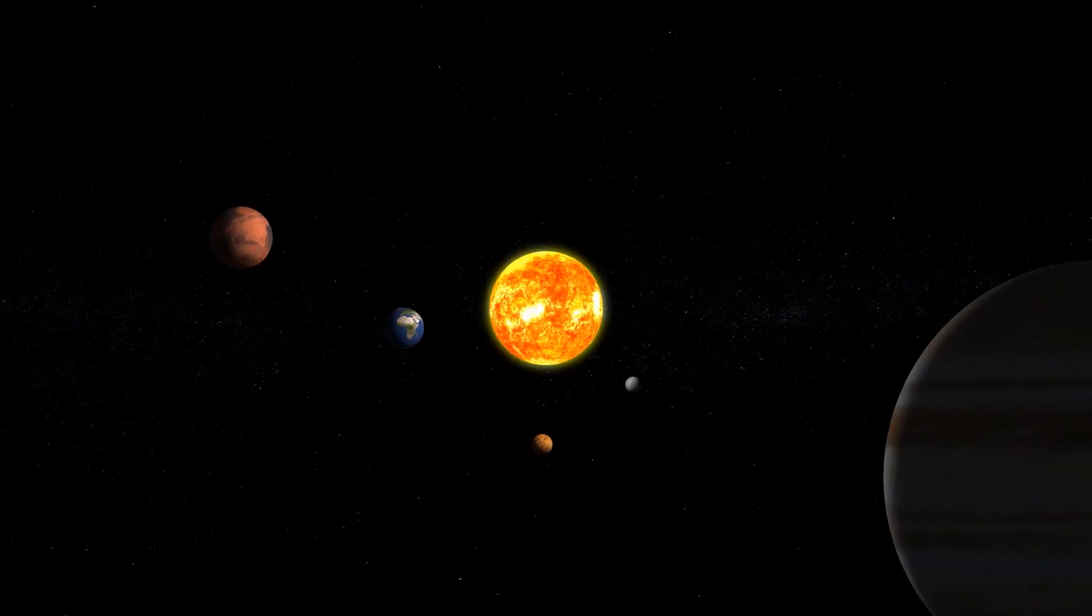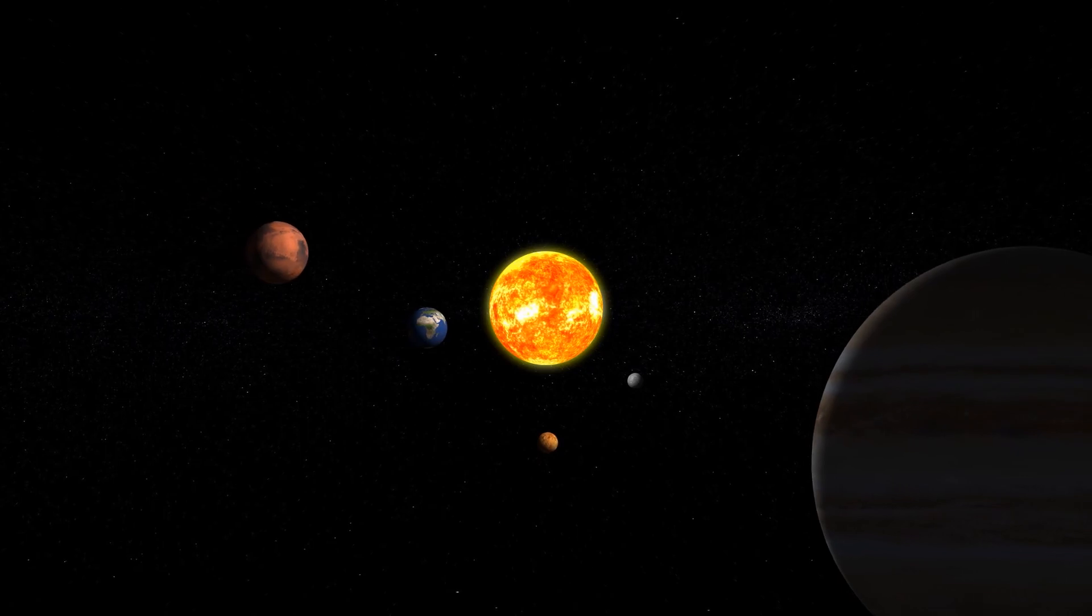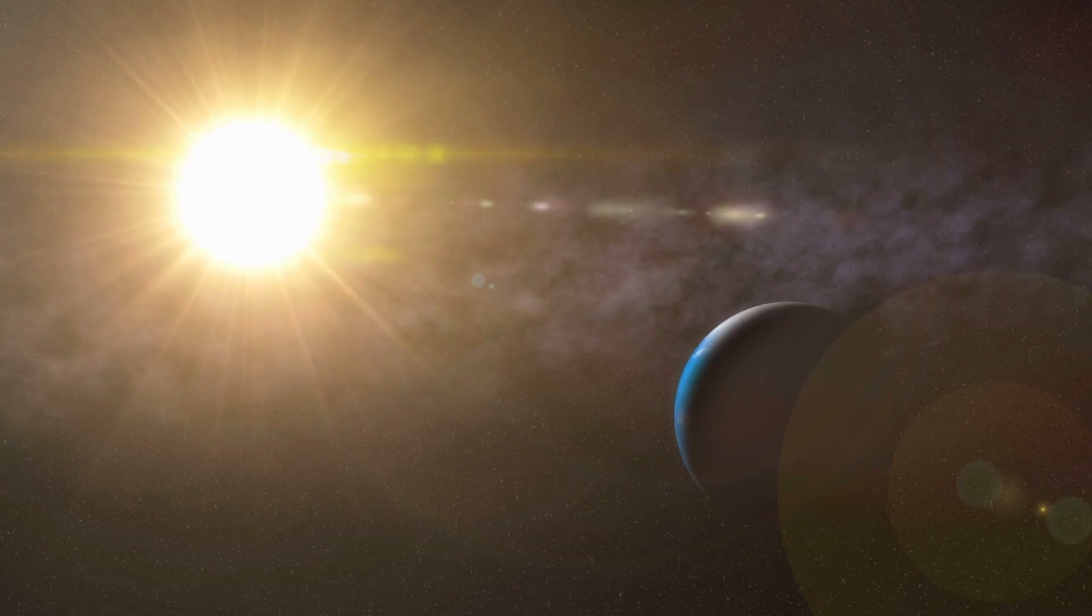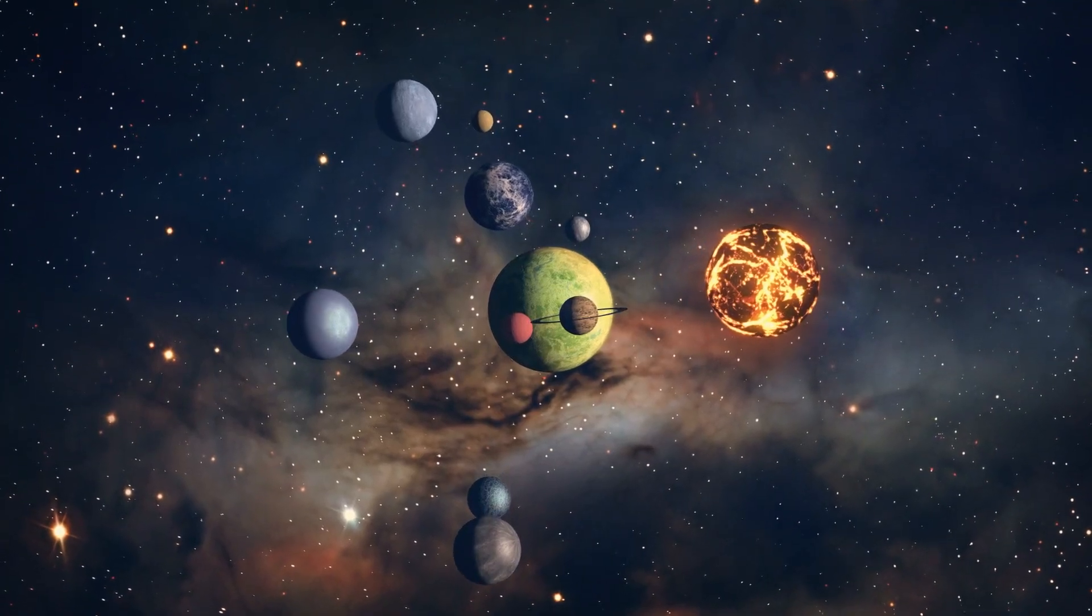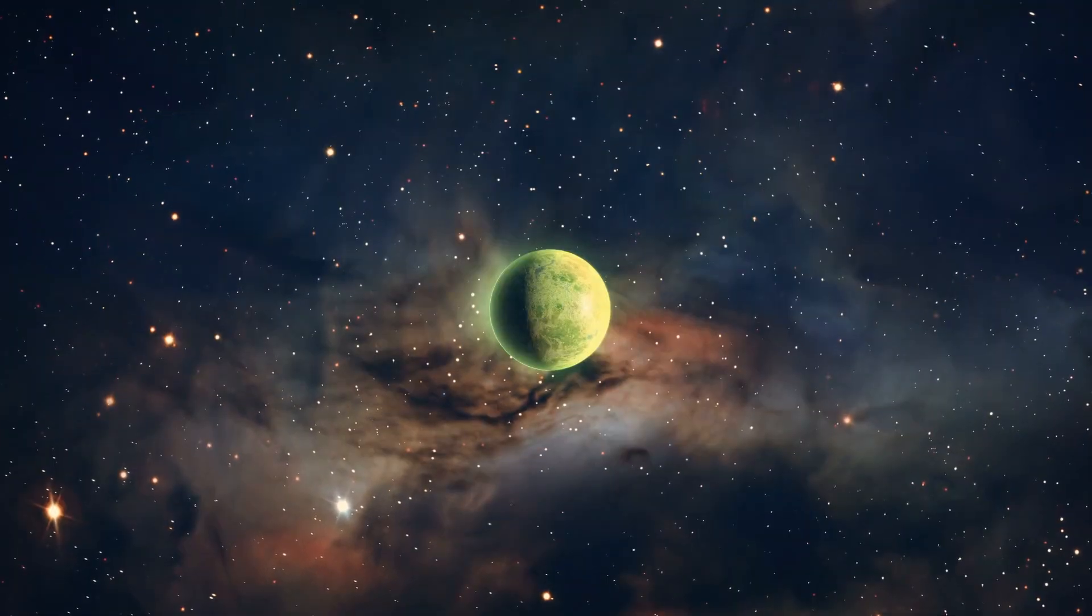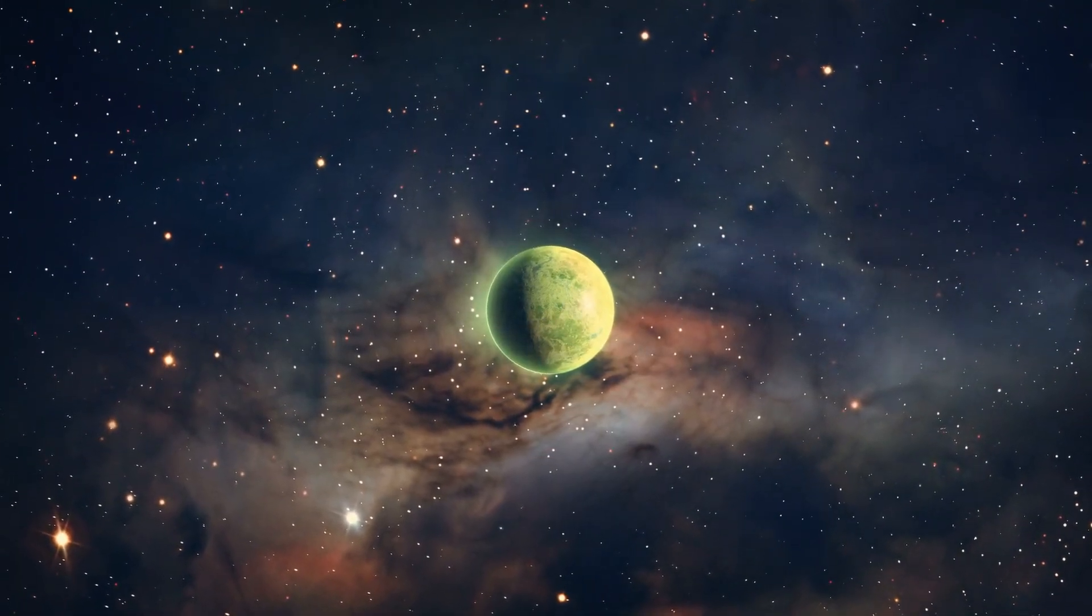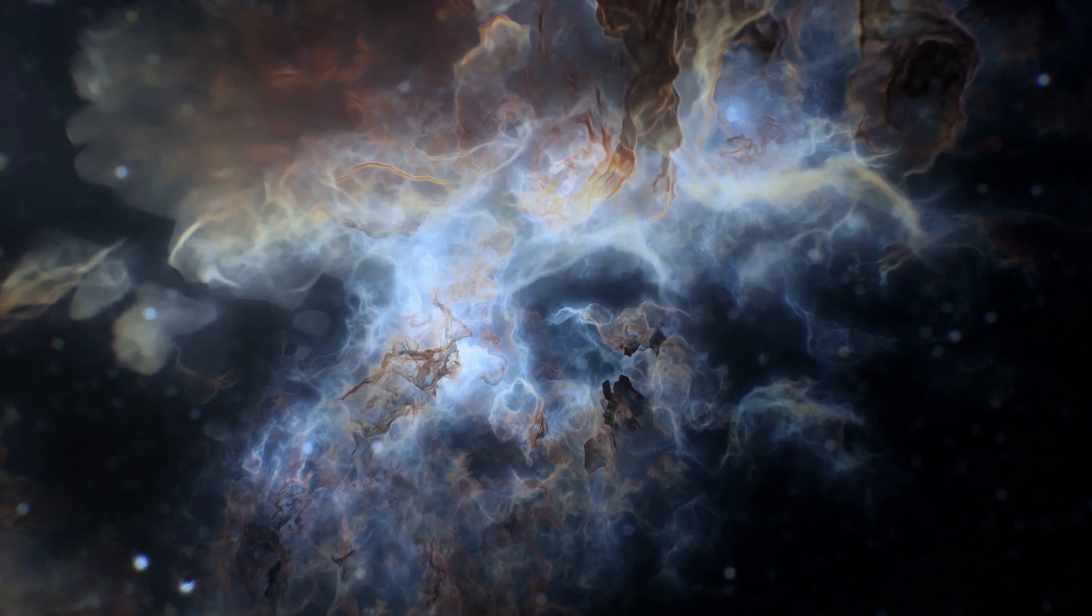Our solar system has been greatly shaped by Jupiter's enormous mass and gravity. Talking about how it affects comet and asteroid trajectories and how it might have contributed to the early solar system's development gives important background information on Jupiter's significance in our cosmic neighborhood.